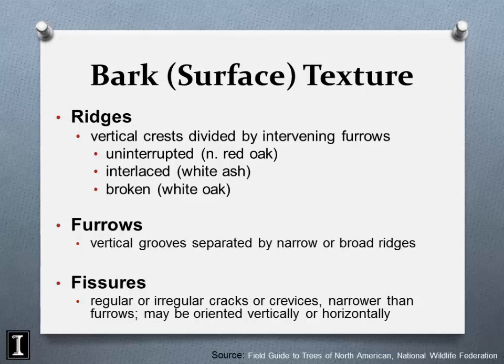Furrows are the vertical grooves or valleys between the ridges in the bark — it's important to understand the difference between ridges and furrows. Fissures are irregular cracks or crevices in the bark. You see fissures frequently on fast-growing trees because the bark is expanding as the tree grows.